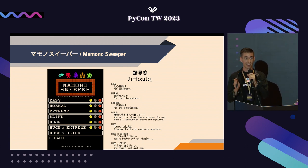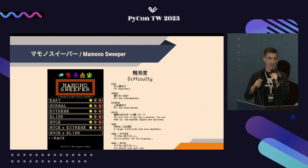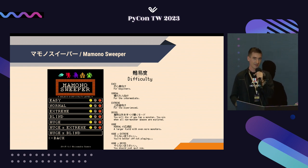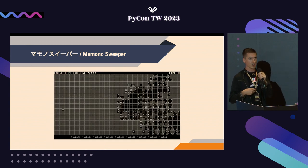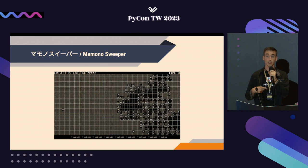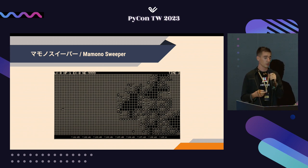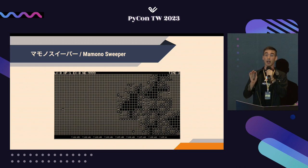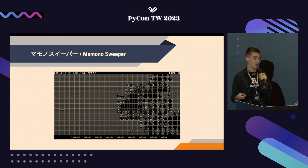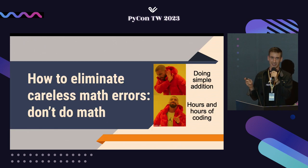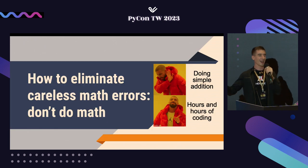Difficulties range all the way from easy to Huge X Extreme — the dev's description being 'yaranai ho ga ii,' or 'you're better off not playing.' The game is fun; I highly recommend it. I played it on the flight over here. Beat it on every difficulty except the last one: Huge and Blind. It's tough because you have to reveal all of the empty squares without leveling up to reduce uncertainty. I have lost hours trying, and usually fail because of bad luck or doing the math wrong. But you know who doesn't make math mistakes? Python, of course.